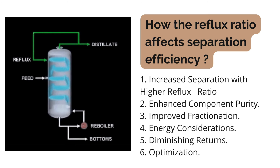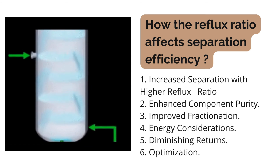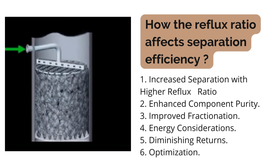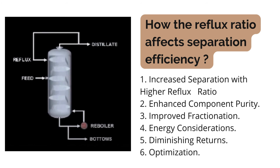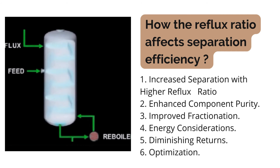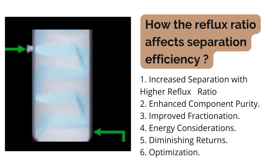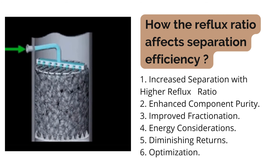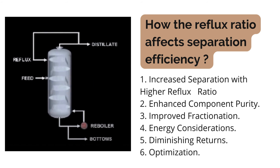The fourth point is energy consideration. While a higher reflux ratio enhances separation efficiency, it also comes with increased energy requirements — more energy is needed for condensation of vapor and reboiling of liquid in the column. There is often an economic trade-off between achieving higher separation efficiency and minimizing energy consumption. The fifth point is diminishing returns: beyond a certain point, the additional benefit in separation efficiency becomes marginal while energy costs continue to rise.